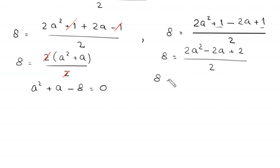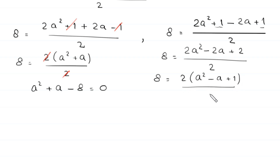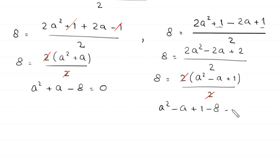Second equation: 8 equals (2a squared plus 1 minus 2a plus 1) divided by 2, which equals (2a squared minus 2a plus 2) divided by 2. Factoring out 2 gives a squared minus a plus 1. Moving 8 to the right hand side: a squared minus a plus 1 minus 8 equals 0, which simplifies to a squared minus a minus 7 equals 0.